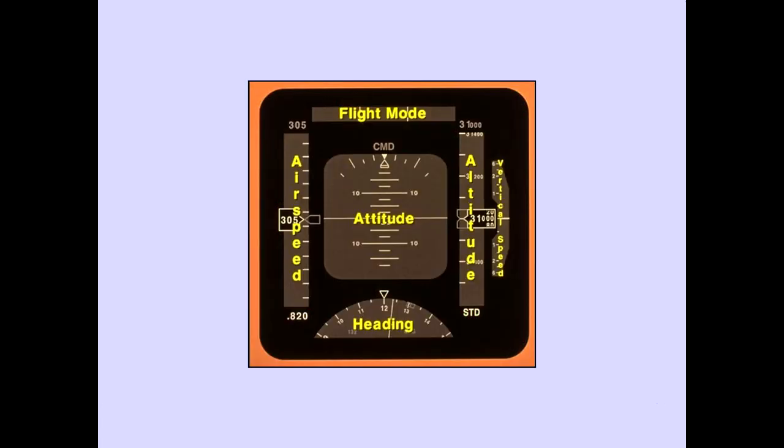The PFD displays flight mode at the top. Across the center are airspeed, attitude, altitude, and vertical speed. Heading is displayed on the bottom of the PFD. The flight mode indication is covered in autopilot.